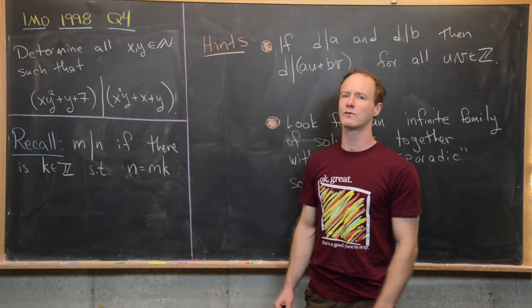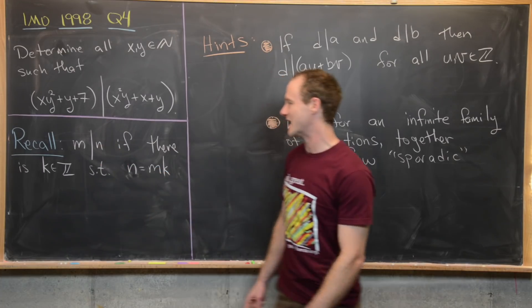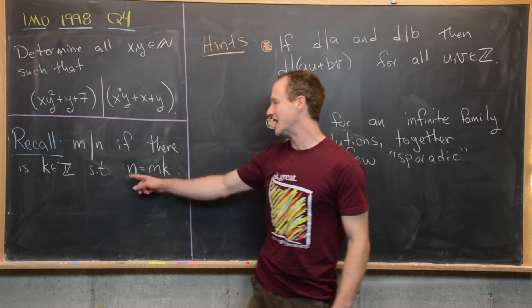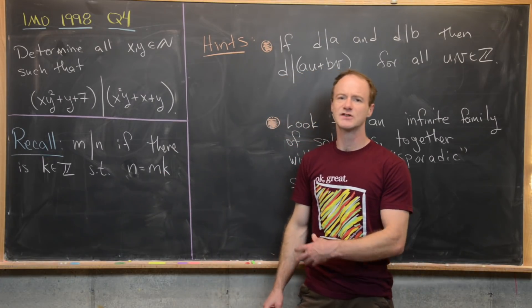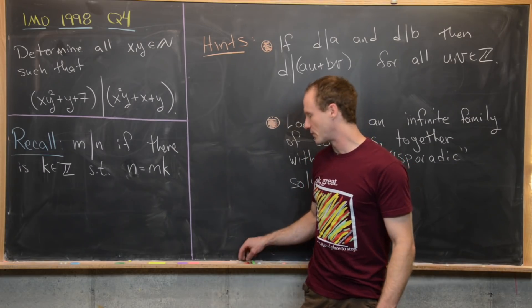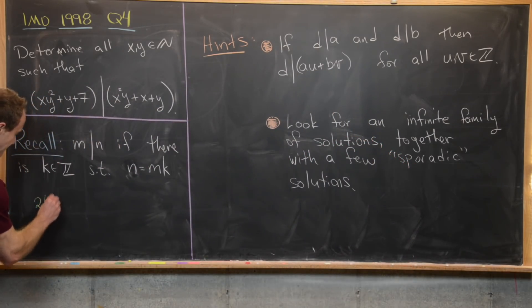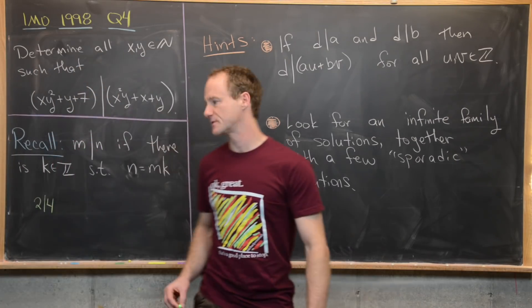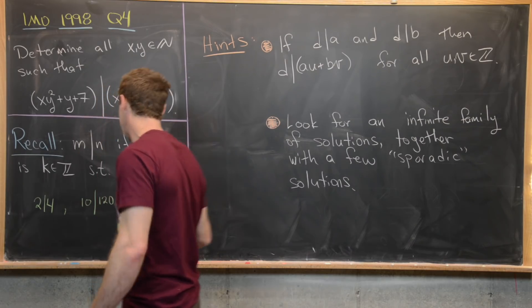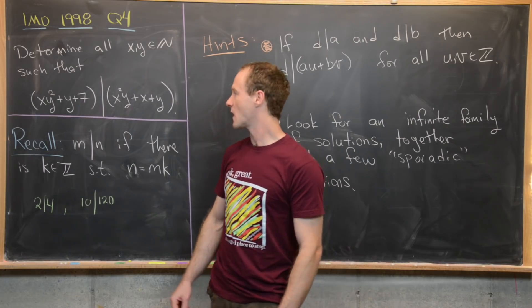Let's recall what it means for one number to divide the other. m divides n if there is a k in the integers such that n equals mk — in other words, m divides n if n is a multiple of m. For example, 2 divides 4 because 4 is a multiple of 2, or 10 divides 120 because 120 is a multiple of 10.